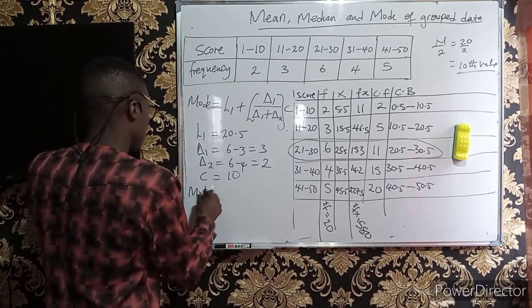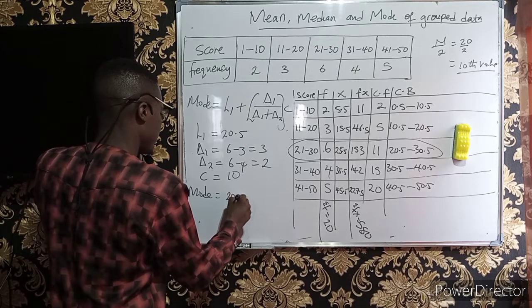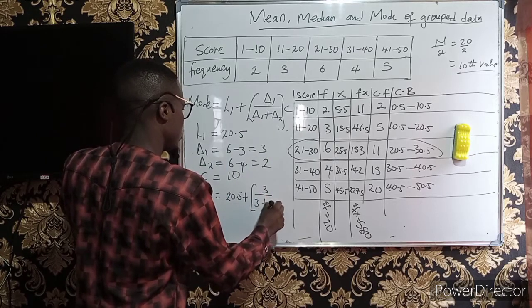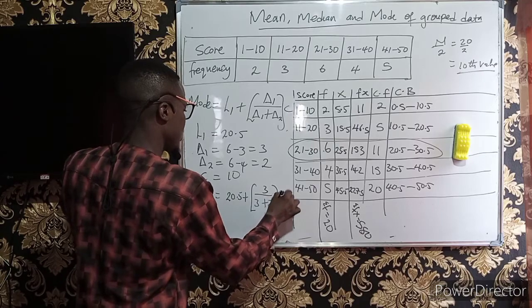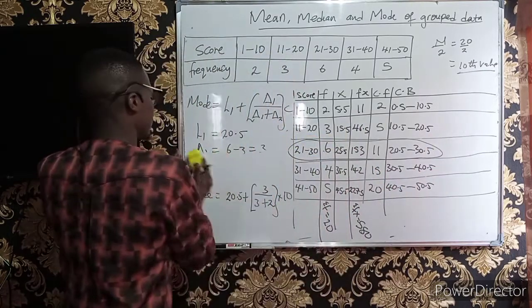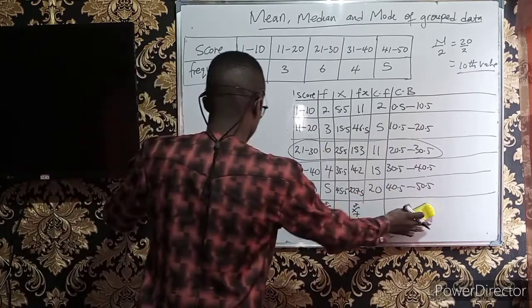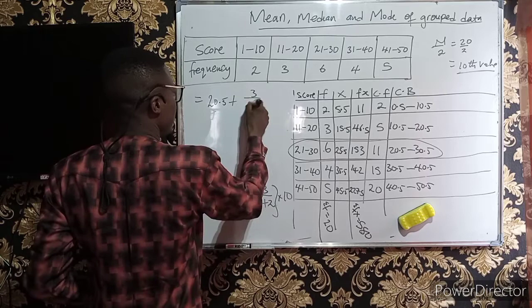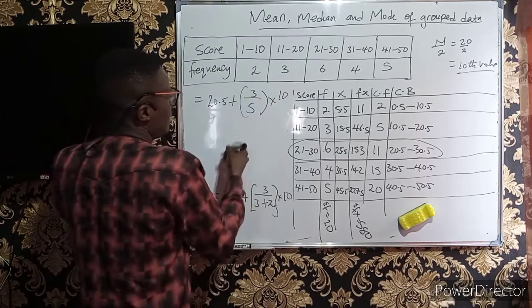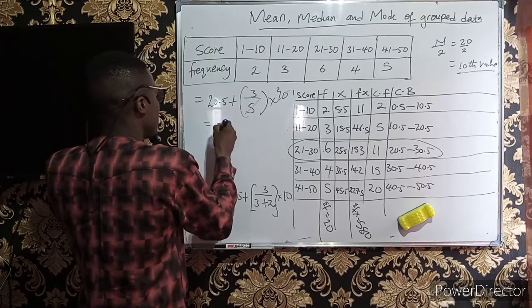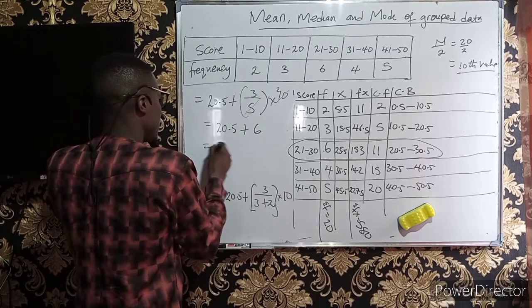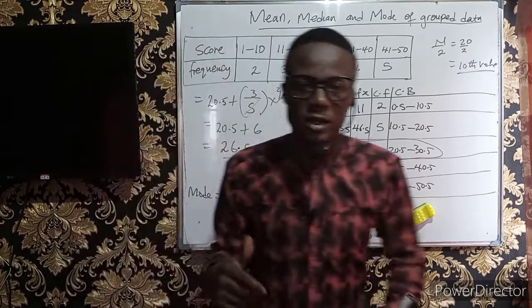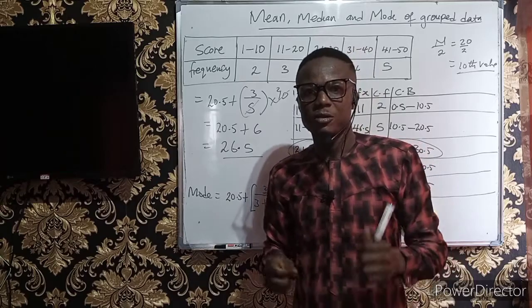Plugging in: mode = 20.5 + [3 / (3 + 2)] × 10 = 20.5 + [3/5] × 10 = 20.5 + 6 = 26.5. So the mode is 26.5. If you enjoyed what you watched, kindly subscribe to my channel so that you don't miss anything from my videos. Thank you.